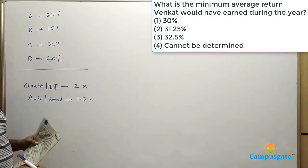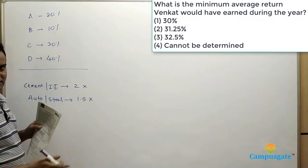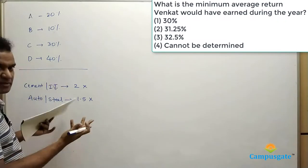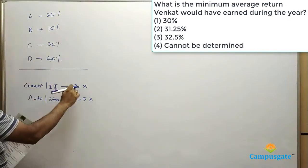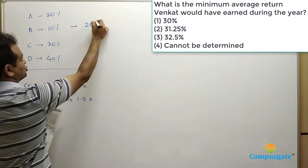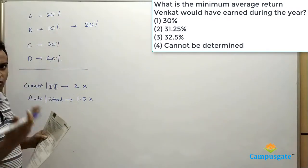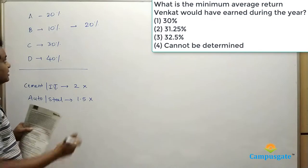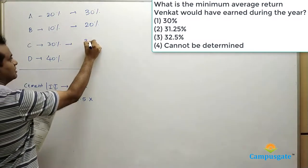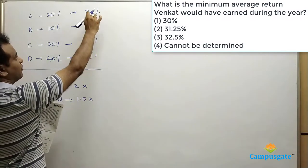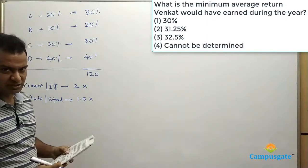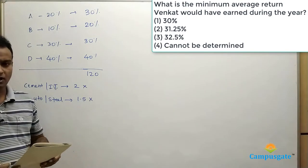When will he get the minimum return? If D announced two times better result, instead of 40% it gives 80%, making his return very high. The minimum return occurs when B gives two times better result, because 10% doubled is only 20%. Assuming B announced extraordinary good results giving 20% return, and the next least value gives 1.5 times — so A gives 15%, meaning the sum is 20 + 20 + 30 + 40 = 110. Wait — B gives 20, A gives 15, C gives 30, D gives 40: total = 105? Let me recalculate: 20 + 30 + 30 + 40 = 120. So 120 divided by 4 gives 30%. The minimum average return is 30%, so we go for answer option 1.